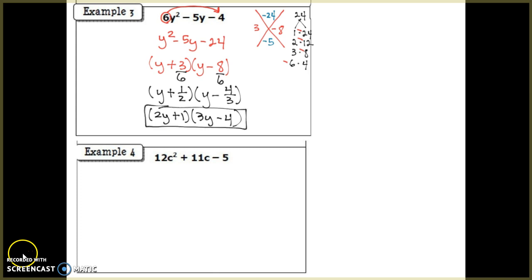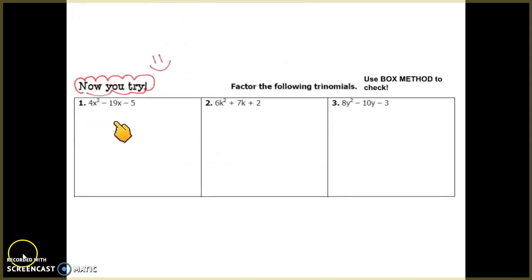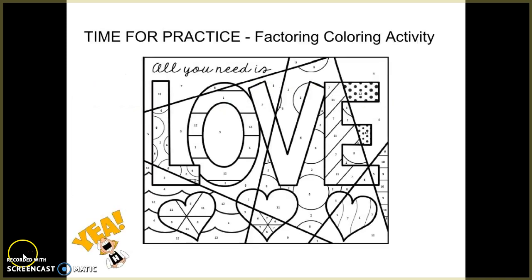This is our factored form. I'll leave checking this one to you to verify it matches the original. Try example 4, and also problems 1, 2, and 3 — I'll insert the work into the video. When you're finished, there's a coloring activity where you write the factored form using the Slip and Slide method and the color corresponds to your answer.